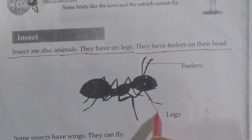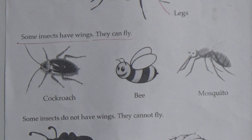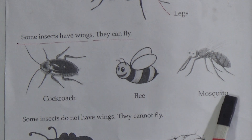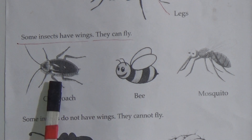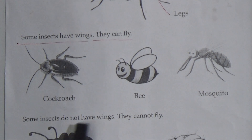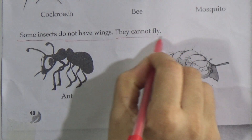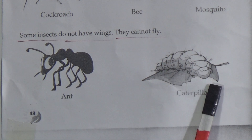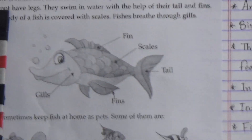These are the feelers, and these are the legs. Some insects have wings — they can fly. Underline this line. See this figure: this is the figure of cockroach, bee, and mosquito. They are insects and they have wings so they can fly. Some insects do not have wings — they cannot fly. See here the picture of ant and caterpillar — they have no wings so they cannot fly.